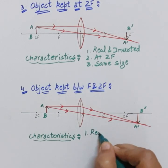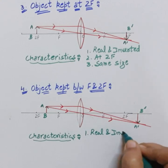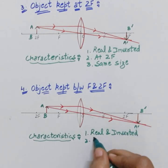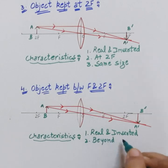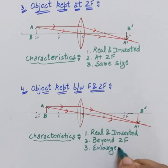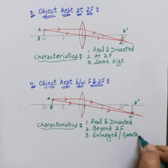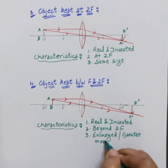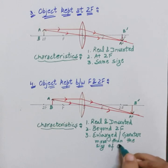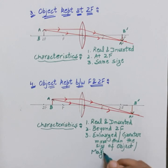The first characteristic is that it is again real and inverted, formed by real intersection of rays. The position: the image is formed beyond 2f. For size, the image is clearly larger — enlarged, or magnified — greater than the size of the object.